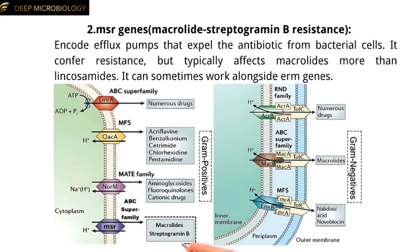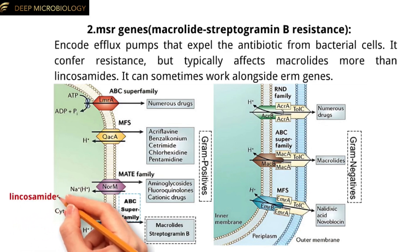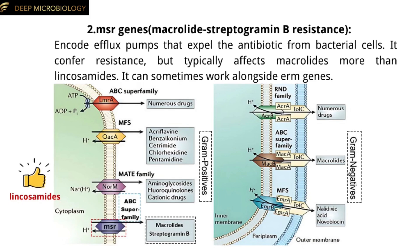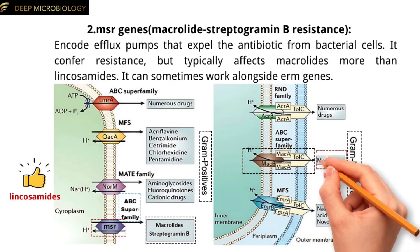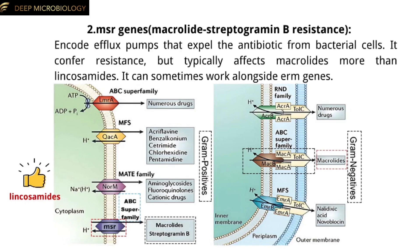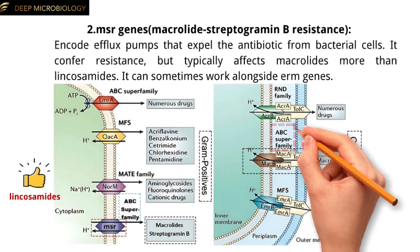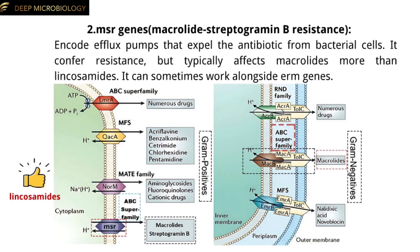In gram-positive bacteria, macrolide streptogramin B resistance is typically mediated by efflux pumps encoded by MSR genes belonging to the ABC superfamily, which pump out macrolides and streptogramin B, leading to resistance against these classes of antibiotics. However, the efflux mechanism does not effectively recognize lincosamides, meaning these drugs are not efficiently pumped out of the cell and remain unaffected by this resistance mechanism. In gram-negative bacteria, the efflux pump associated with macrolide resistance belongs to the ABC superfamily and specifically expels macrolides, reducing the effectiveness of these antibiotics.